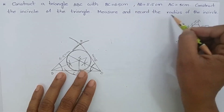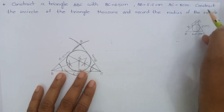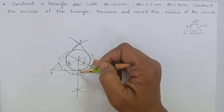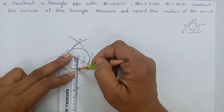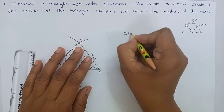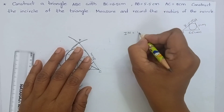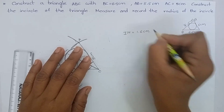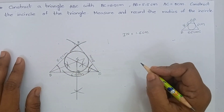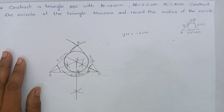Measure and record the radius of the incircle. Measure IN. IN is 1.6 cm. Hope you have understood. Thank you.